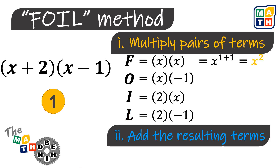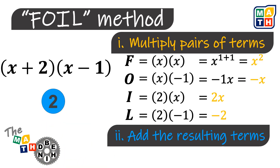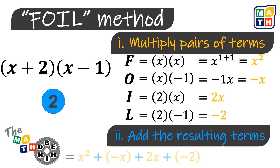We simply get the product of each pair of these terms. And then for step 2, we are just going to add the four different results. Finally, the result is x squared plus x minus 2.